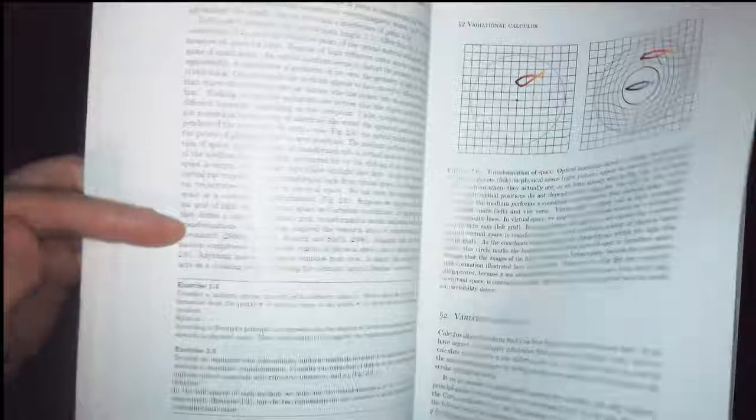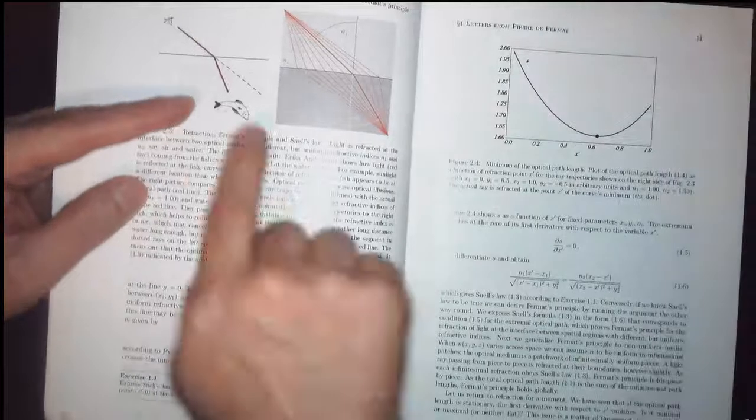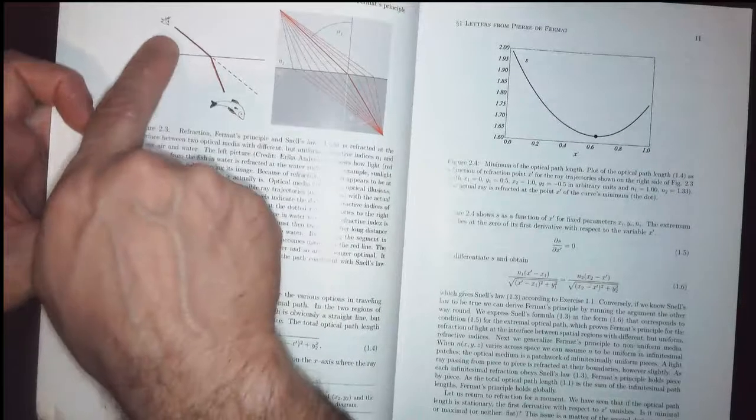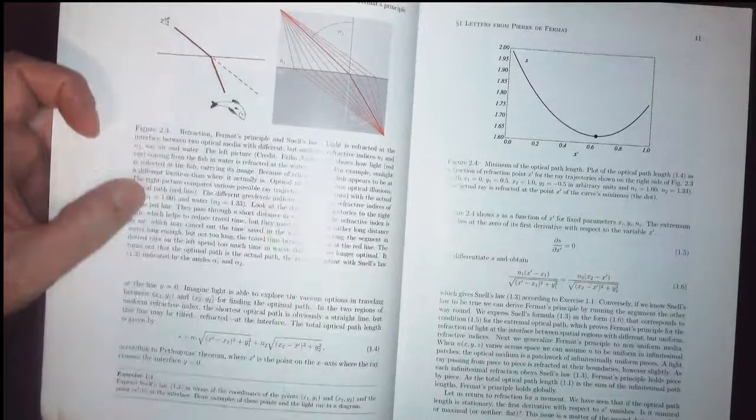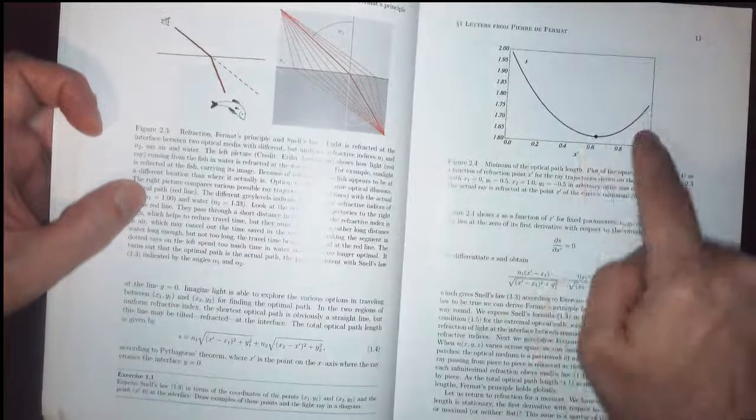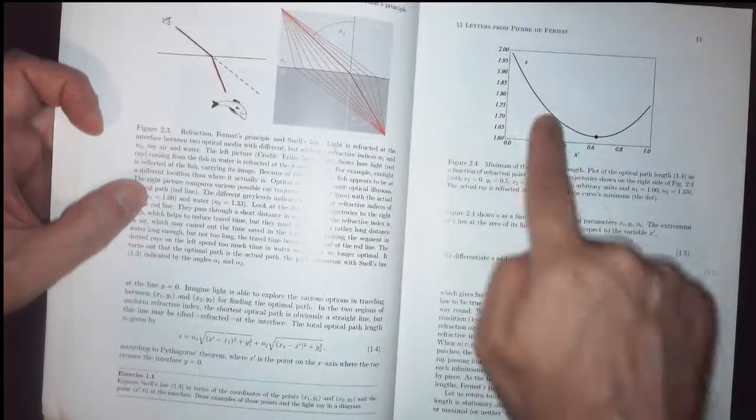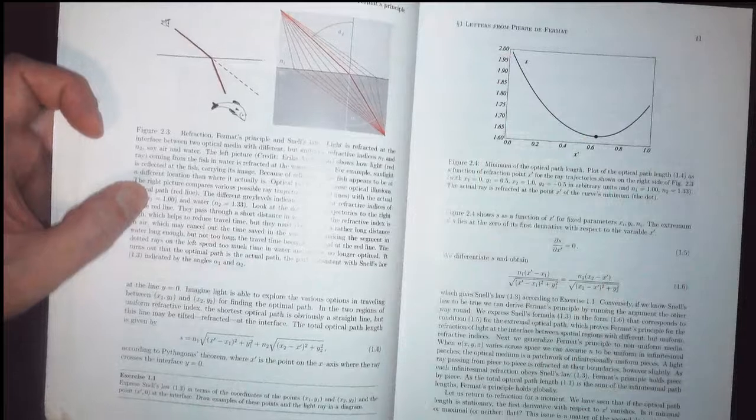This is all basically the same as with Snell's Law. The light takes the least time, that's Fermat's principle, from the fish to your eye, and that gives you Snell's Law. But if you have a continuously varying index of refraction, you get a curved path.